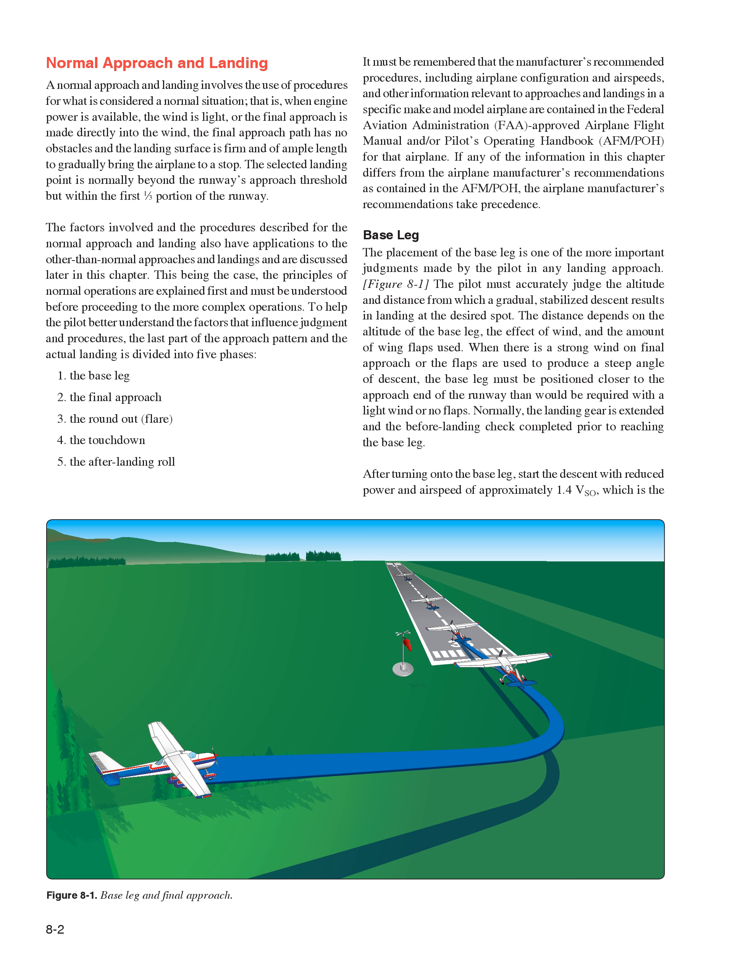To help the pilot understand the factors that influence judgment and procedures, the last part of the approach pattern and the actual landing is divided into five phases: 1. the base leg, 2. the final approach, 3. the roundout/flare, 4. the touchdown, and 5. the after-landing roll. The manufacturer's recommended procedures, including airplane configuration and airspeeds, are contained in the FAA-approved Airplane Flight Manual and/or Pilot's Operating Handbook (AFM/POH). If any information in this chapter differs from the manufacturer's recommendations, the manufacturer's recommendations take precedence.